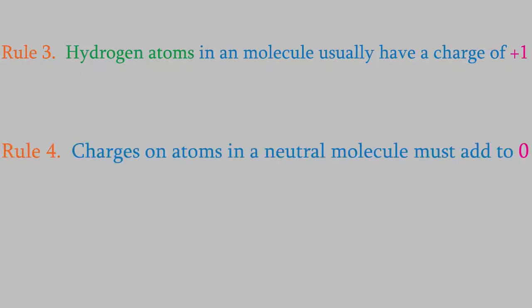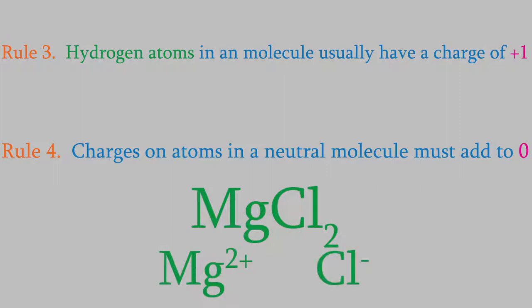The fourth rule is that the charges on the atoms in a neutral molecule should add up to zero. You already know about that rule. We've used it many times to figure out the formulas of molecules. For example, the reason magnesium chloride has the formula MgCl2 is because the charges on the atoms must add up to zero. Since magnesium has a charge of plus 2 and chlorine is minus 1, we need 2 chlorines to make the charges cancel out.